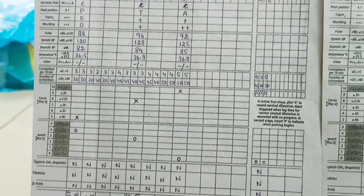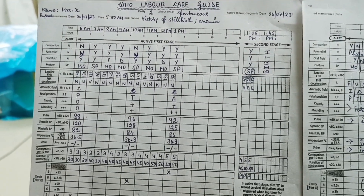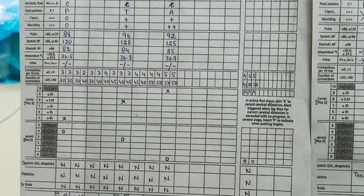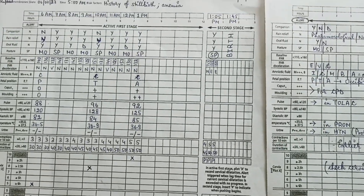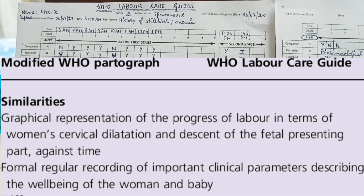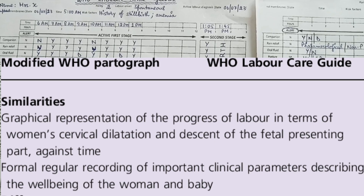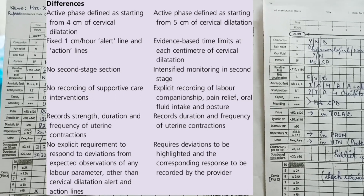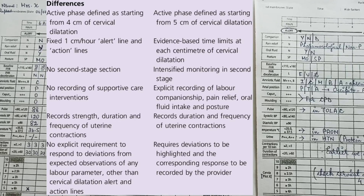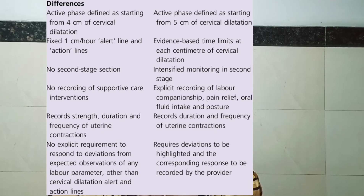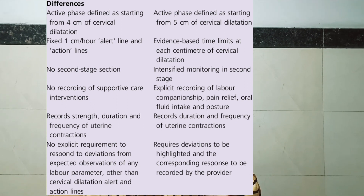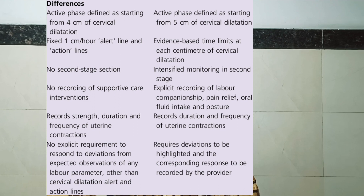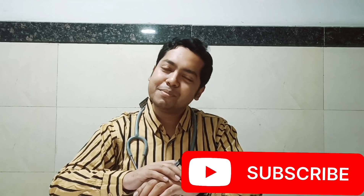The labour care guide is a modification of the WHO partogram which, if properly charted, helps in the correct identification of the nature and duration of labour. There have been a few key changes from the previous WHO partogram, which a comparison table summarizes in detail — this is very important for examinations when you are asked about the differences between the labour care guide and the previous WHO modified partogram. For more information, stay updated and subscribe to our channel, Medhi Mantra.